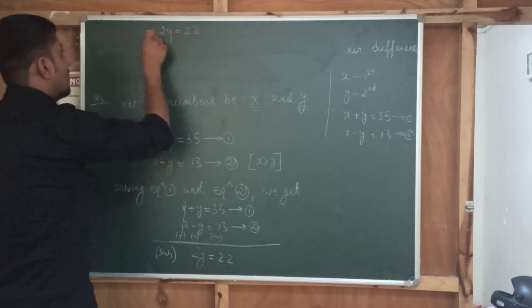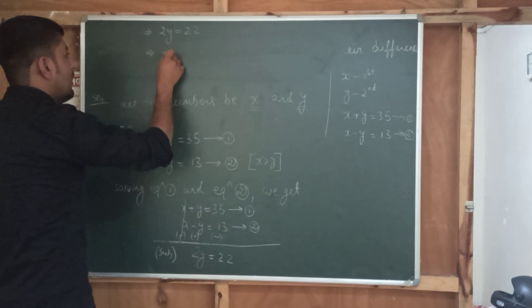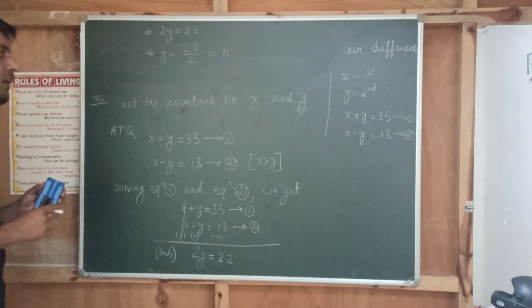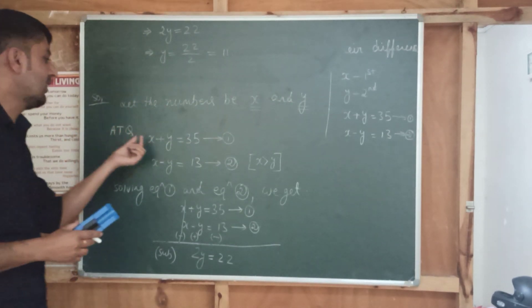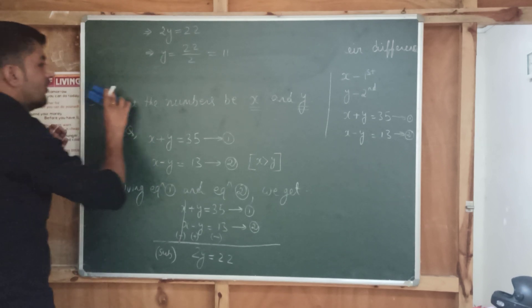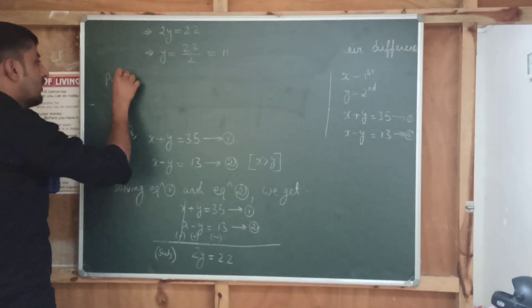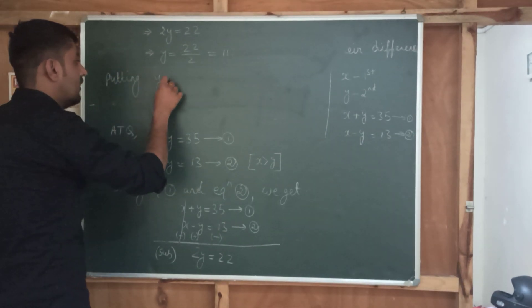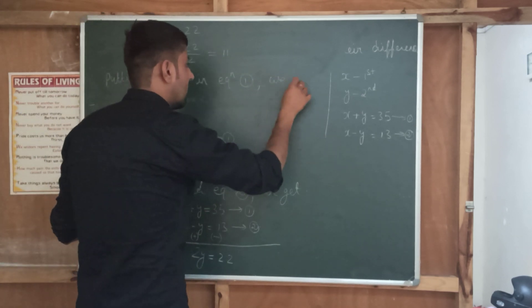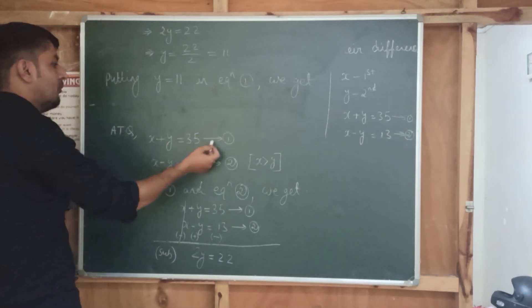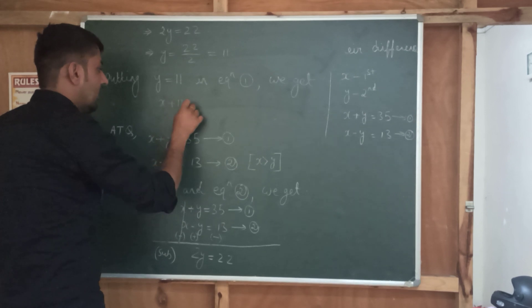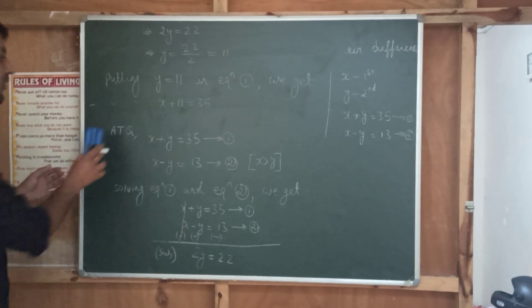Your 2Y is equal to 22. So the value of Y is 22 divided by 2, which equals 11. That means the second number is 11. Now, to find the first number, put Y equal to 11 into equation number 1. Equation number 1 is X plus Y equals 35, so it becomes X plus 11 is equal to 35.